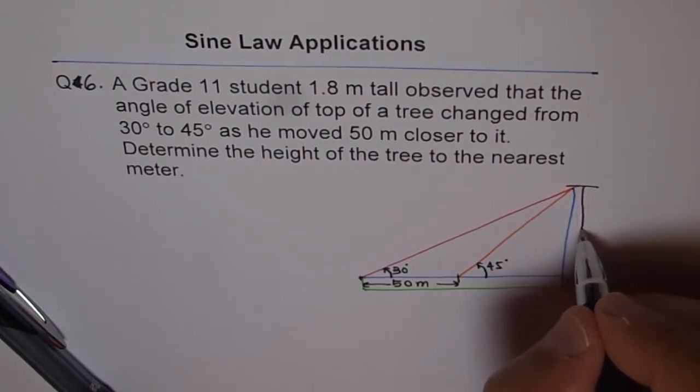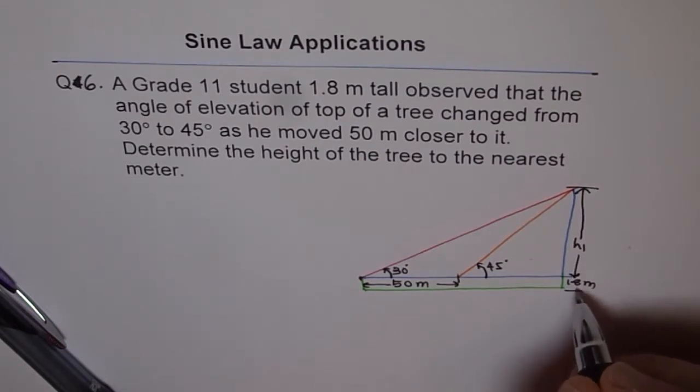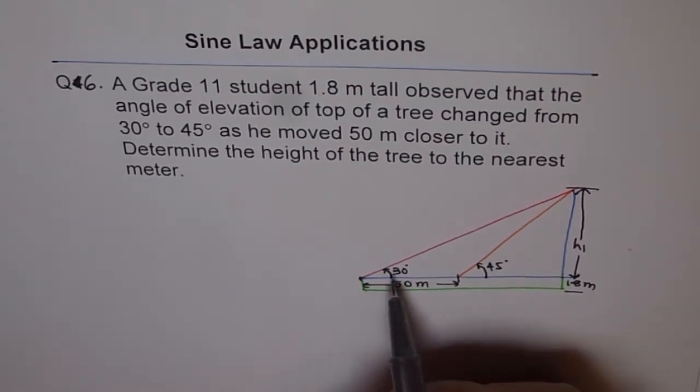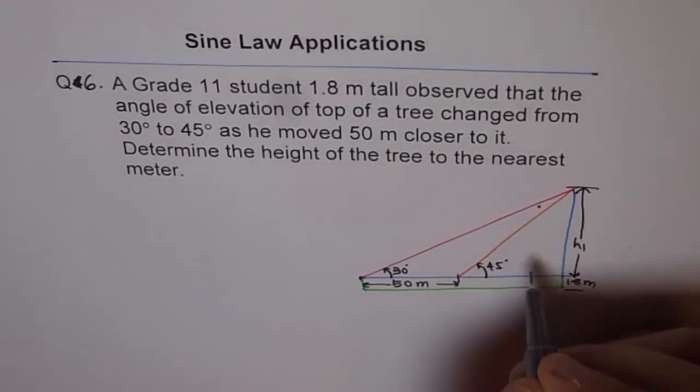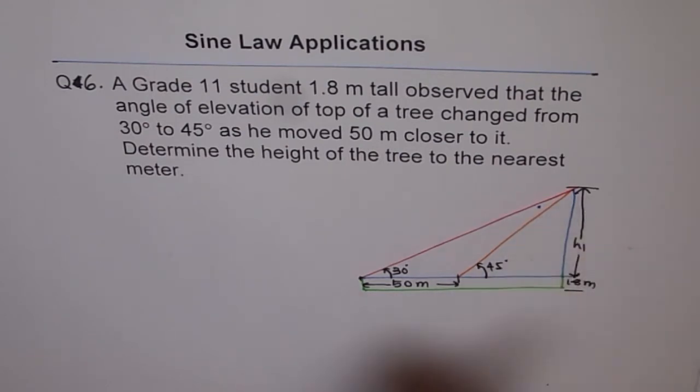So let's say, let me write this as h1 so that I don't forget that I have to actually add 1.8 to get the height of the tree. Now, so this is the triangle which we have. So in this triangle, we already know quite a few things, a side and these angles. If we know the side, we really want to know that angle.